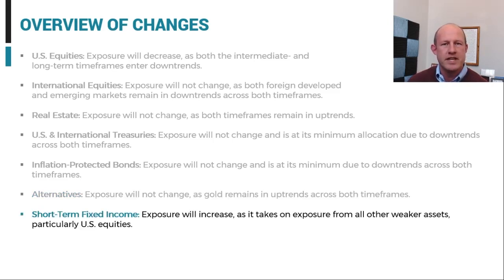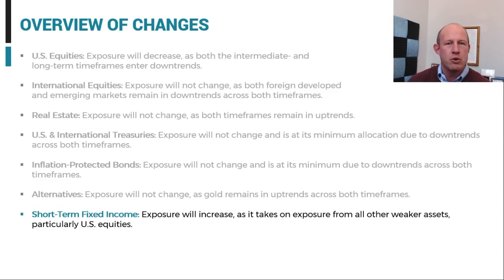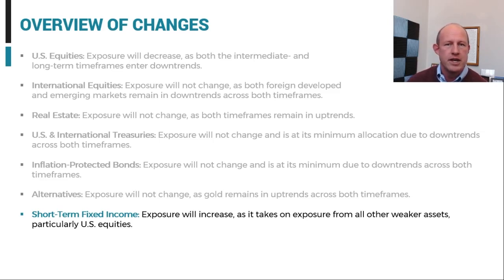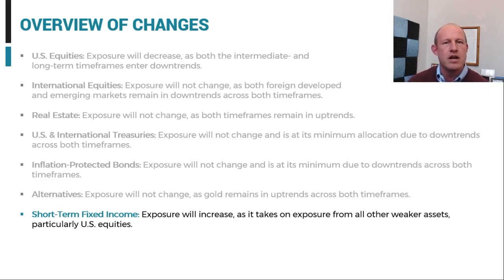Short duration fixed income will rise. Due to the decrease in exposure from U.S. equities, we will hand that exposure off to ultra-short-term duration bonds with durations settling around the three to six month range. This is where we've been in the fixed income portion of our book for about a year now.